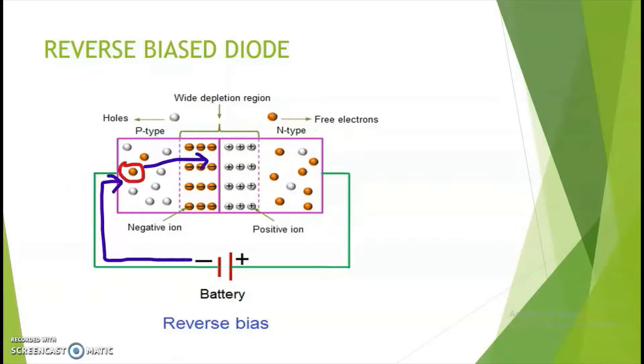The electrons are repelled by the negative terminal. They cross the barrier and are attracted by the positive terminal. This current is called reverse current.